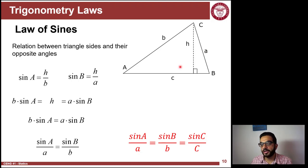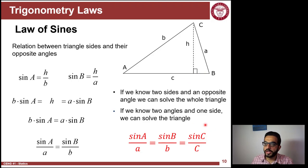So sine of angle A over the side opposite to it, lowercase a - that ratio is the same as the ratio of the other pairs of angles and opposite sides of the triangle. If you have two sides and an opposite angle, you can solve the whole triangle. Or if you have two angles and one opposite side, you can solve the whole triangle.